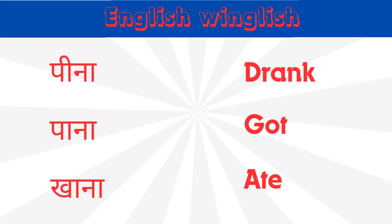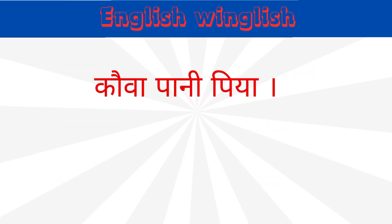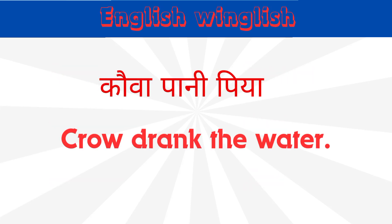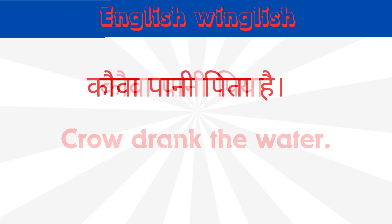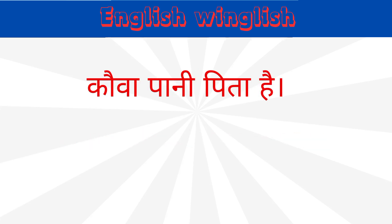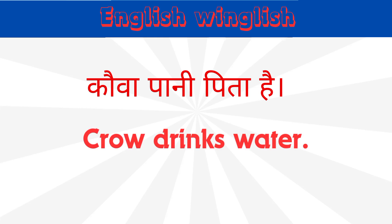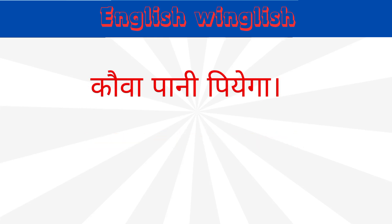Peena means drank, paana means got, kana means ate. Let's make sentences with these words. Cowa paani pia — the crow drank the water. In present tense, you can say cowa paani pita hai — the crow drinks water.